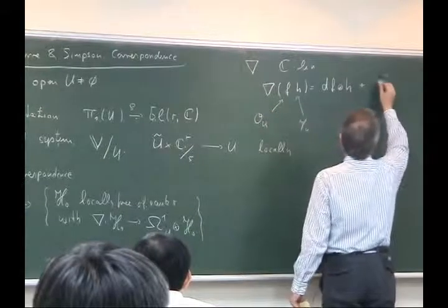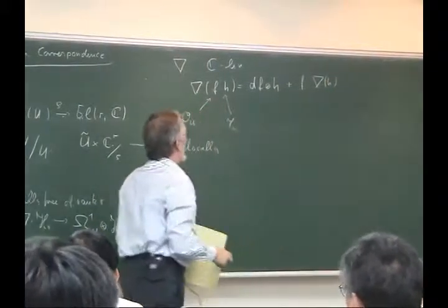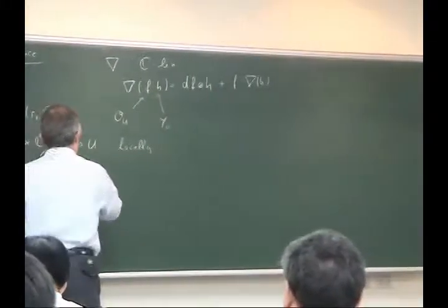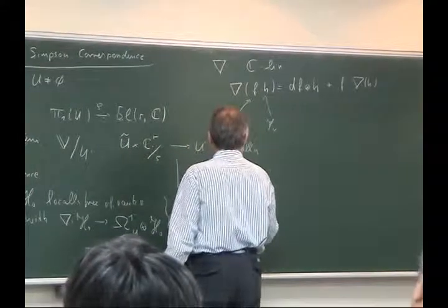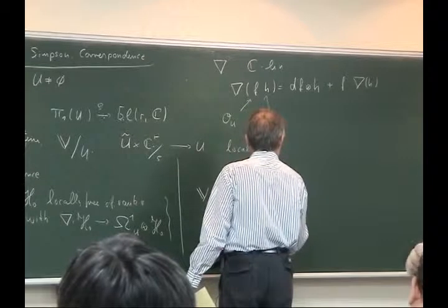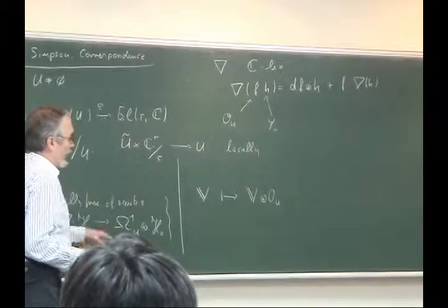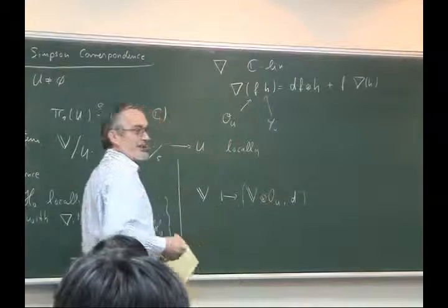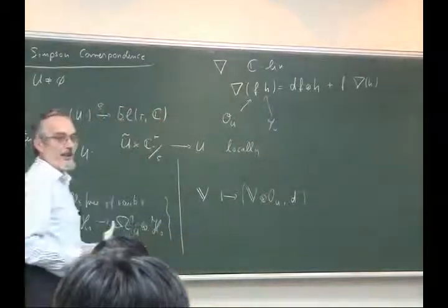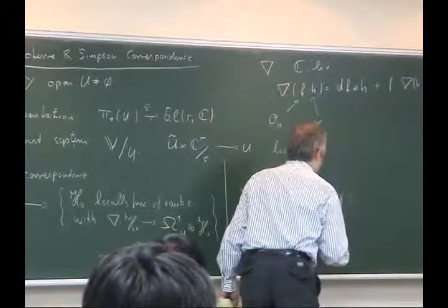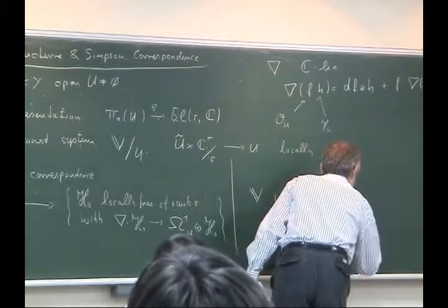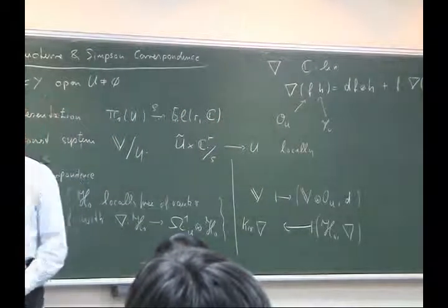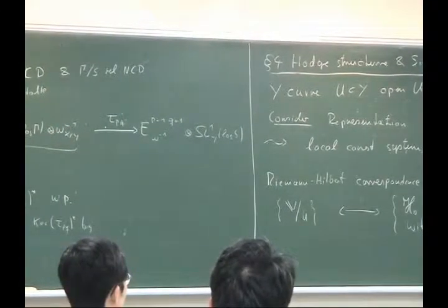The relation between the two sides is quite simple to write down, though it takes more work to prove. The relation says that if I start with V, I map it to V ⊗ O_U, and on O_U I have a differential, so I take the standard differential — it's easy to see this defines a connection. For the other direction: given (H^0, ∇), one maps it to the kernel of ∇. One has to prove that the kernel of ∇ is a local constant system, and this is an exercise in linear differential equations. On this side one also has to assume ∇² = 0.